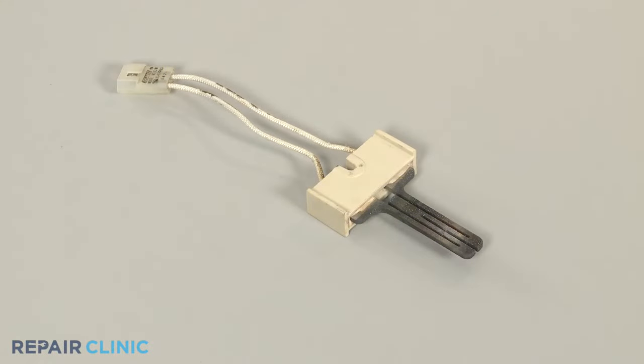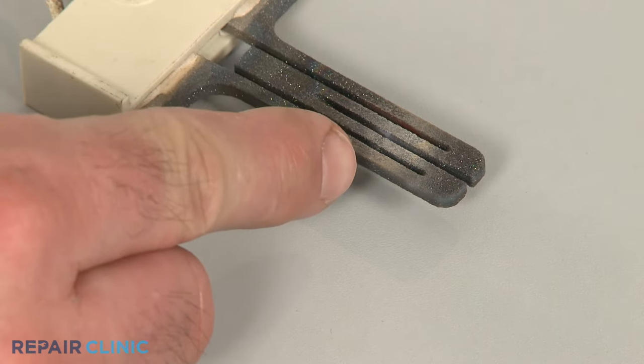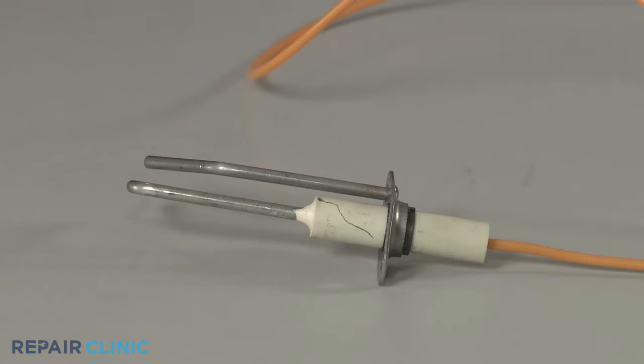You can often determine that a glow bar style igniter has failed if the filament appears singed or cracked. A crack in the ceramic base or frayed wires could indicate a spark igniter has failed.